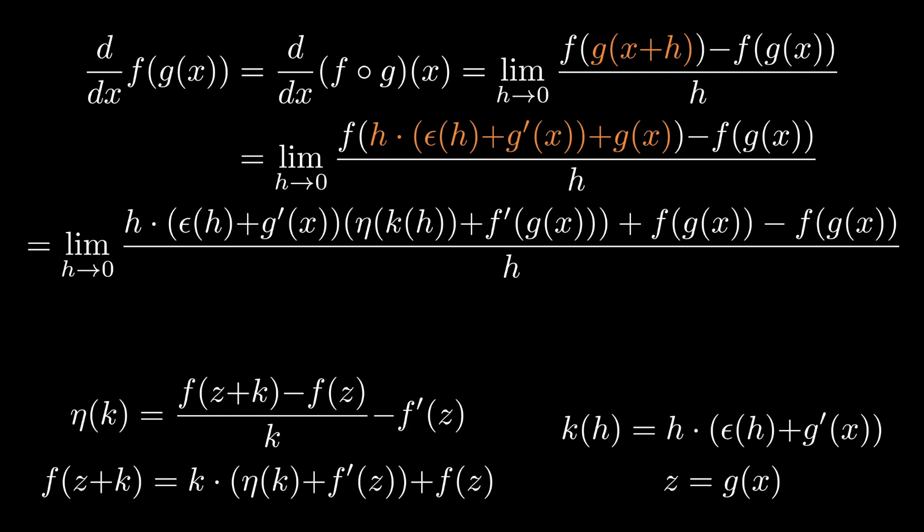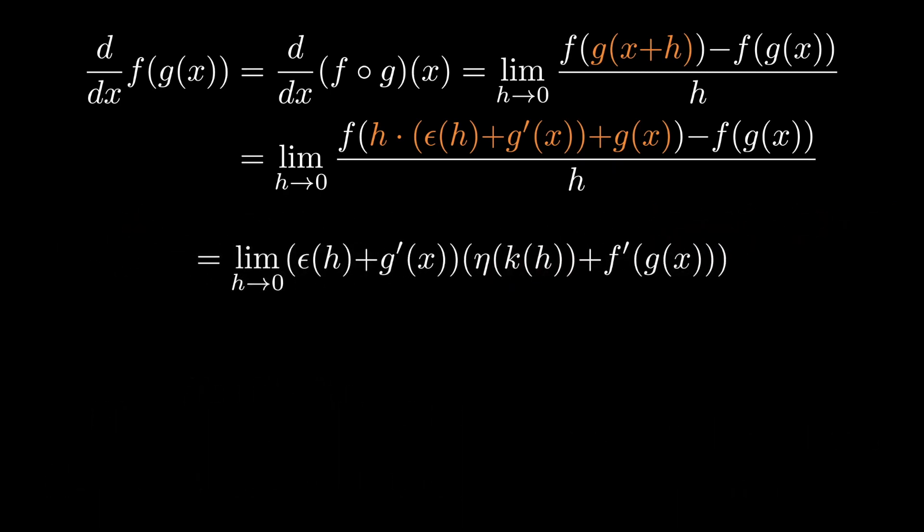We plug those in, and we get a big complicated expression. We see some opportunities to simplify though, and immediately we can remove the f of g of x minus f of g of x. Once we've done that, we notice that we have h on both the top and the bottom. Simplifying, we get to the limit of a product.